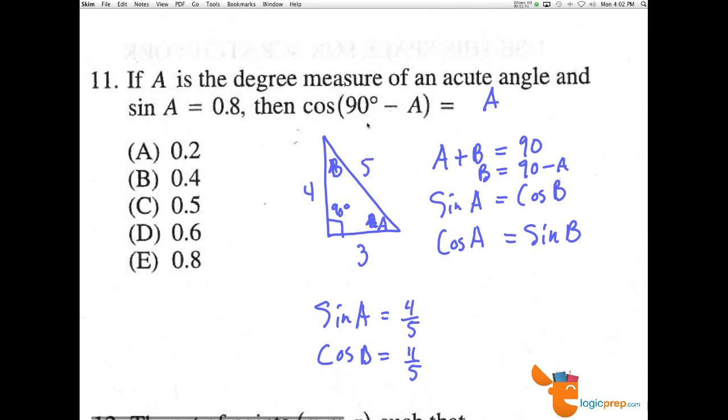So, this is sort of like a little trick problem. The sine of A is 0.8, and so is the cosine of 90 minus A, which is the cos of the other angle in the right triangle. So, 0.8 is the correct answer.